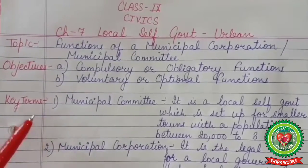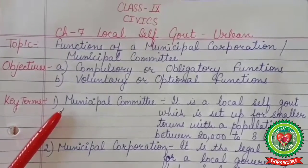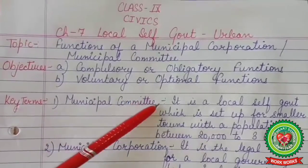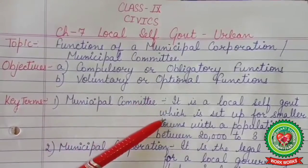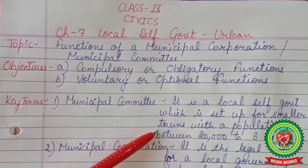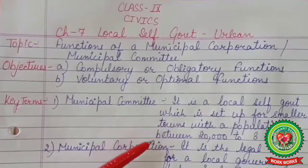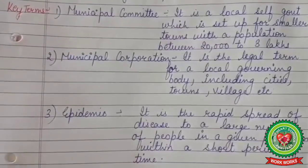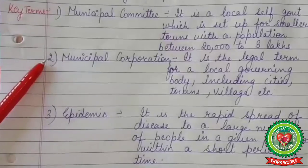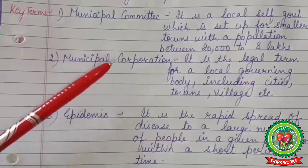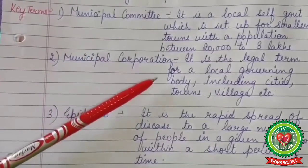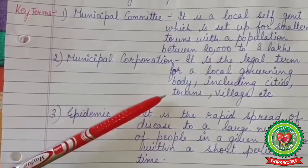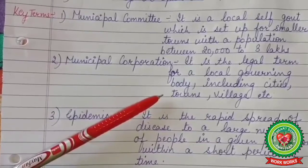Now some key terms. 1. Municipal Committee: It is a local self-command which is set up for smaller towns with a population between 20,000 to 3 lakhs. 2. Municipal Corporation: It is the legal term for a local governing body including cities, towns, villages, etc.